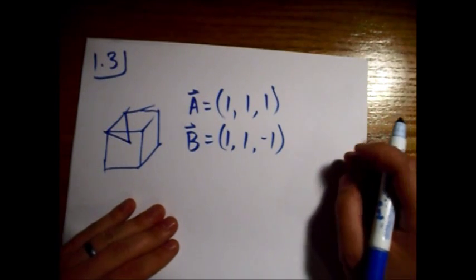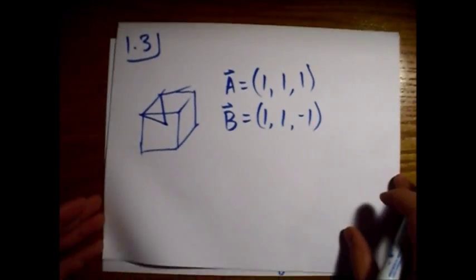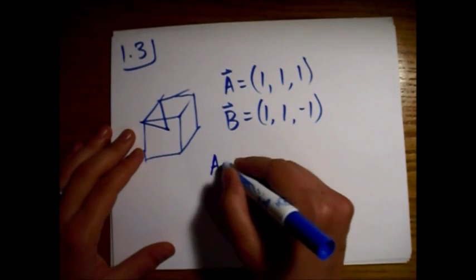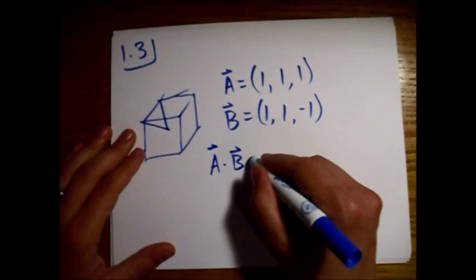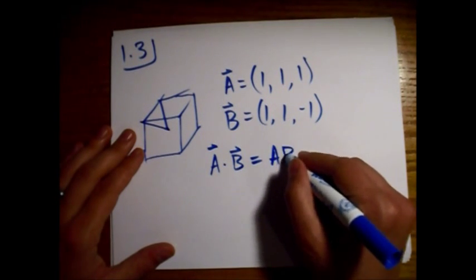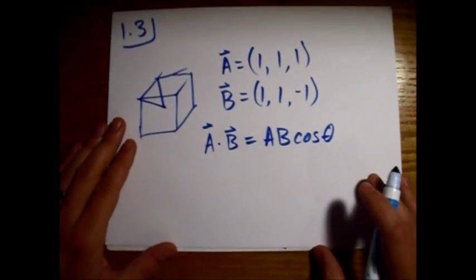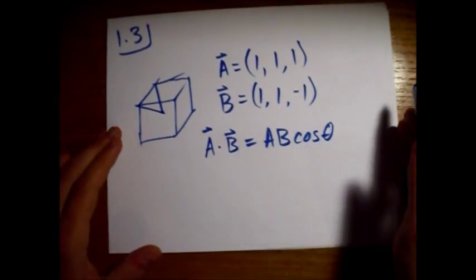So we want to find the angle between the two. All right, so what we're going to use is the definition of the dot product and we'll basically solve for theta.